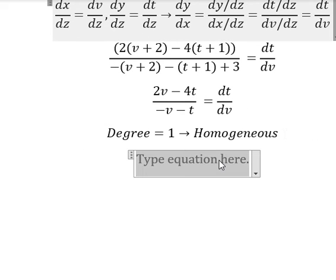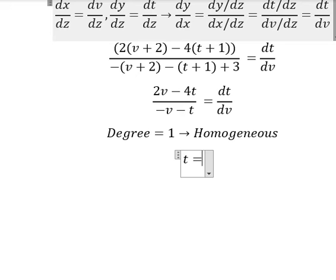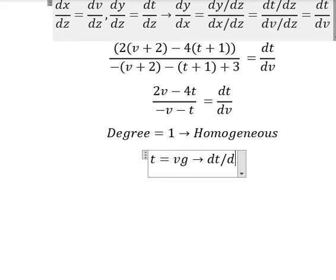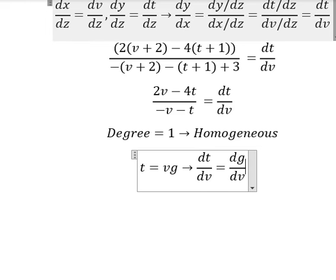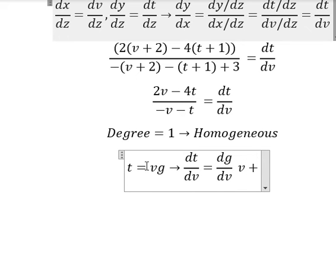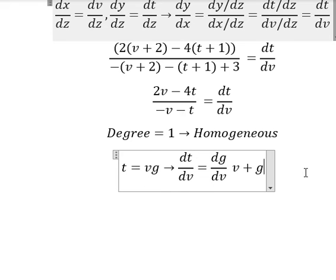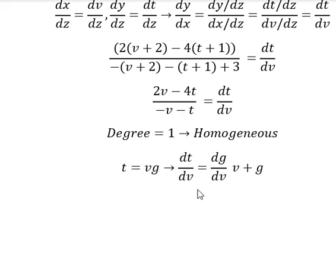Now I will put t equals vg. If we do the first derivative for both sides, we have dt over dv. We multiply by v — the first derivative of g gives dg over dv multiplied by v — and the first derivative of v gives number one, so we just have g.